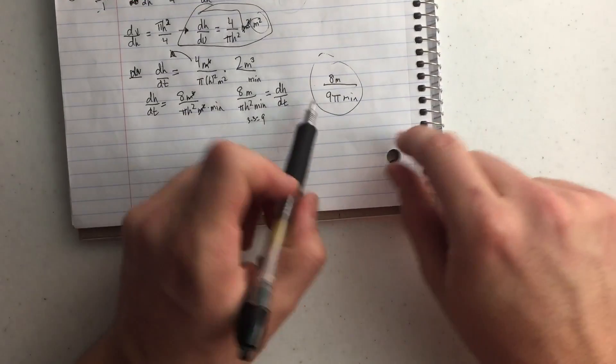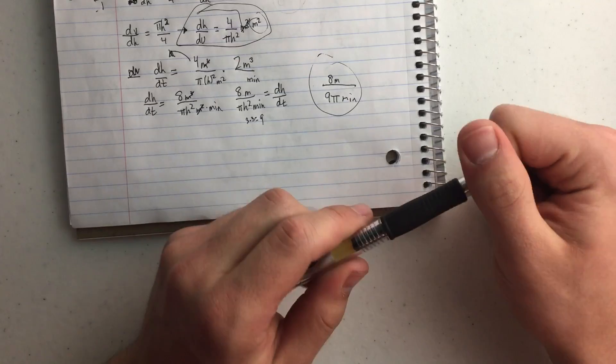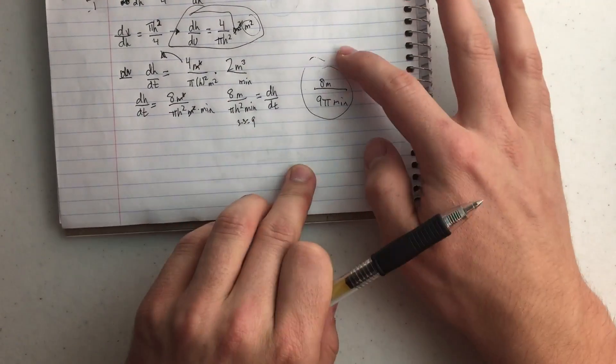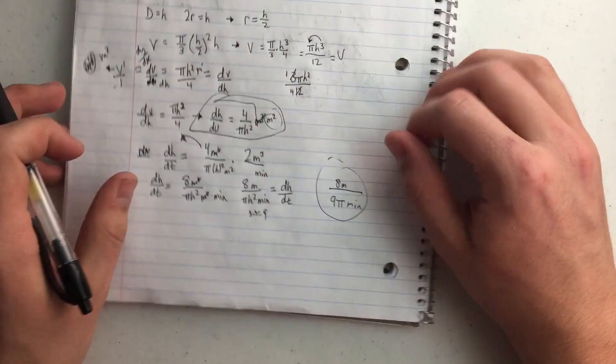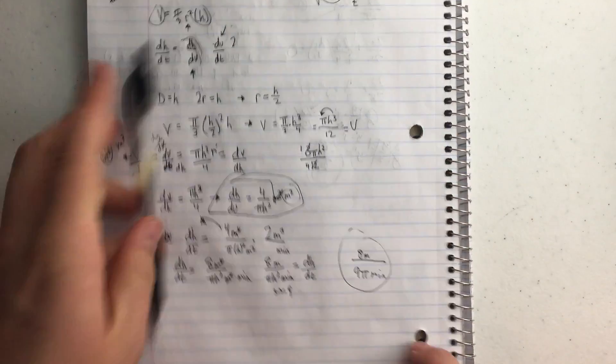So it's changing at 8 meters per 9 pi minutes. That's the rate at which the thing is growing. The conical thing of sand is growing at that instant in time. So I know it was long. But I hope that was helpful.